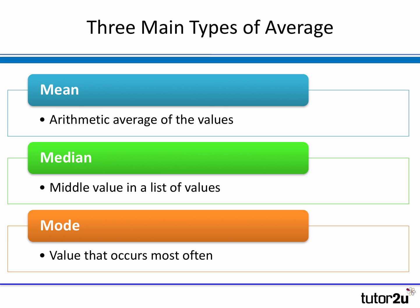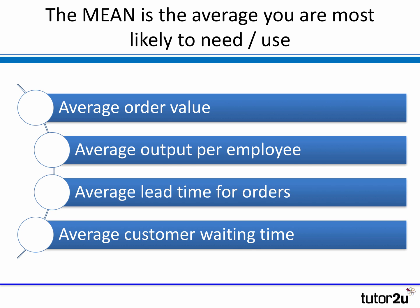Now, of course, there are different types of average. The three that you typically come across are listed on the screen there. The mean, which is the simple arithmetic average of all the values that you're looking at. The median, which is the middle value when you list the values measured in numerical order. And there's the mode — the value from a group of observations that occurs the most often, the most frequent. But in your business exam, you're most likely to be using and considering the mean, the arithmetic average.